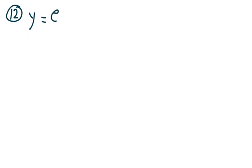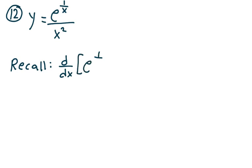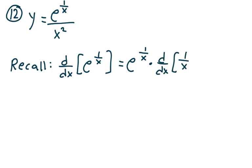Let's take a look at problem 12. y equals e to the 1 over x divided by x squared. Let's recall the derivative of e to the 1 over x with respect to x: it equals e to the 1 over x times the derivative of 1 over x with respect to x — that's chain rule — which gives us negative 1 over x squared times e to the 1 over x. Now I'm ready to apply the quotient rule to y equals e to the 1 over x over x squared.